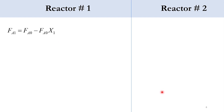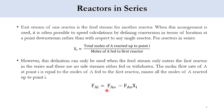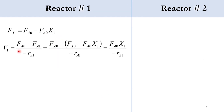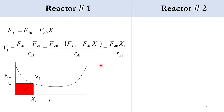The general mole balance gives FAi = FA0 - FA0·Xi. So FA1 = FA0 - FA0·X1. For the first CSTR: V1 = (FA0 - FA1) / (-rA1). Substituting FA1, FA0 cancels and we get V1 = FA0·X1 / (-rA1), represented by the rectangular region up to X1 for the adiabatic system.